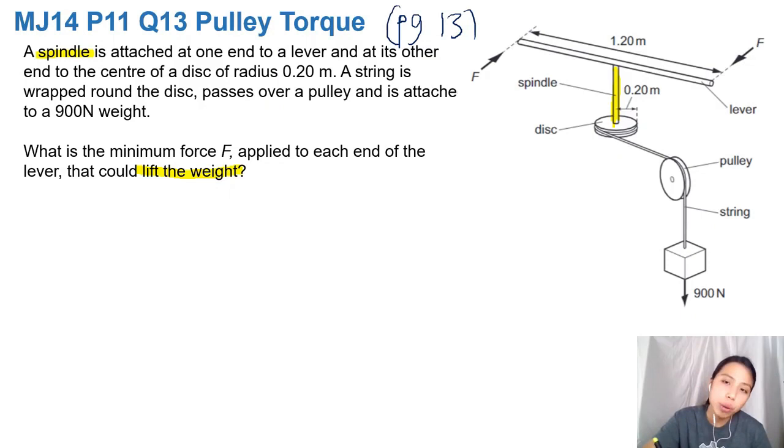So your spindle is going to rotate thanks to a lever on top like a helicopter. Someone's going to crank it. And at the bottom, it's a disc trying to turn it.